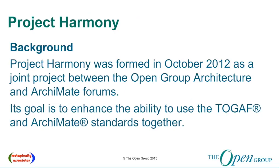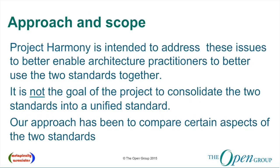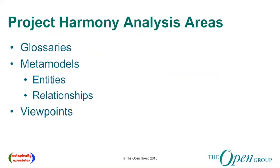We've been at it for a little bit over two years, and the result has been for the Phase 1 activity the production of three major white papers describing the different areas we've been looking at, and then also this practitioner's guide that we'll be focusing on. The goal here is to enhance the ability to use the frameworks together, but it is not the goal to consolidate the standards into a unified standard. We want to keep them as separate entities that people can decide to use independently. We're basically looking at a way of comparing certain aspects of the two standards and then seeing if we can recommend ways of working around some of the differences we discover. The four areas are: glossaries and terms, content metamodels, entities and relationships, and viewpoints.